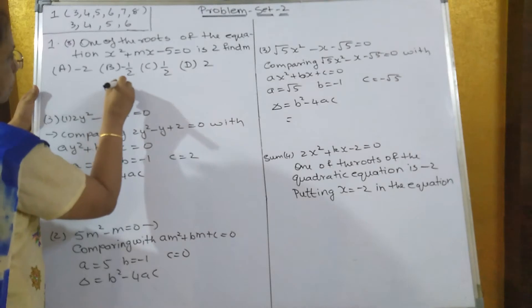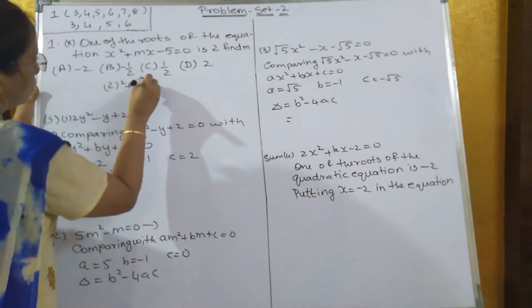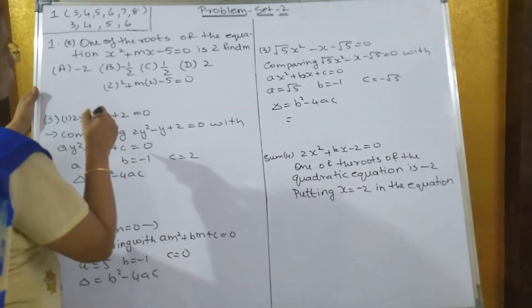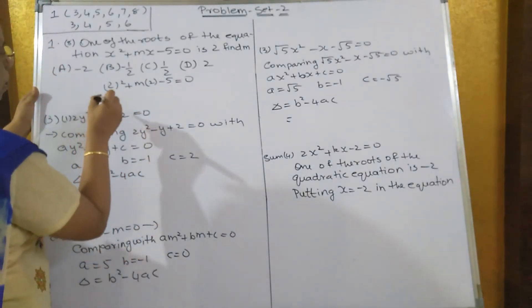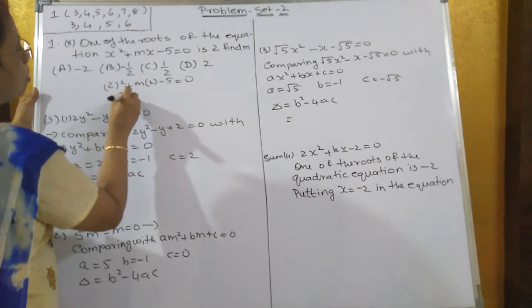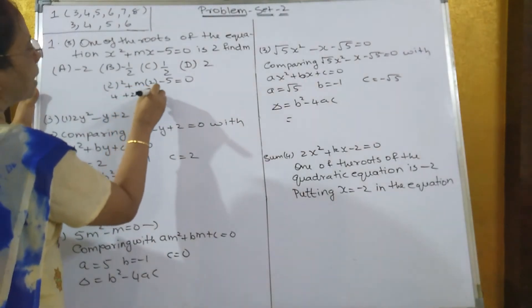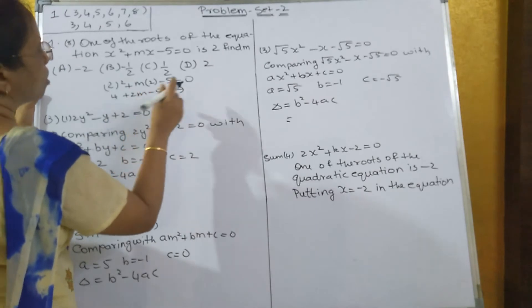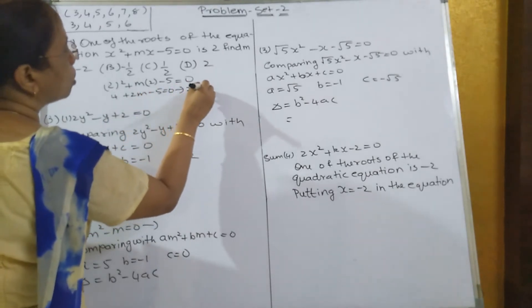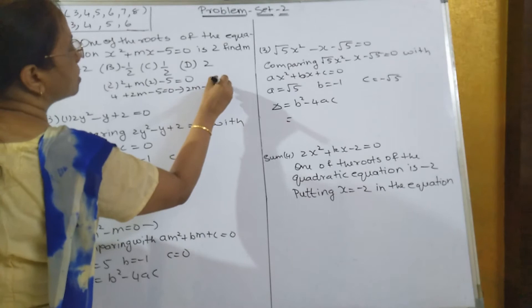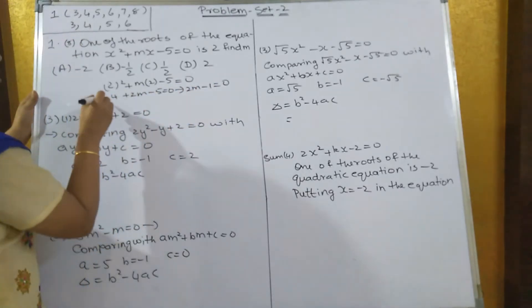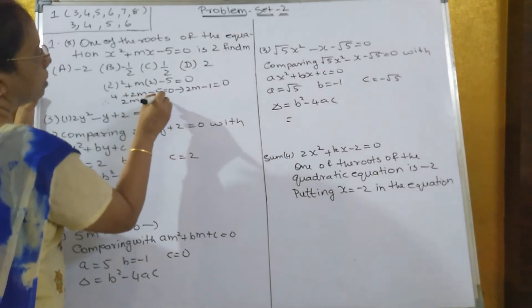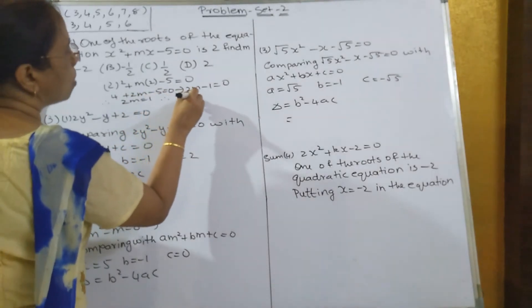2² + m×2 - 5 = 0. So, 4 + 2m - 5 = 0. 4 minus 5 is minus 1. So 2m - 1 = 0. Therefore, 2m = 1. Therefore, m = 1/2.